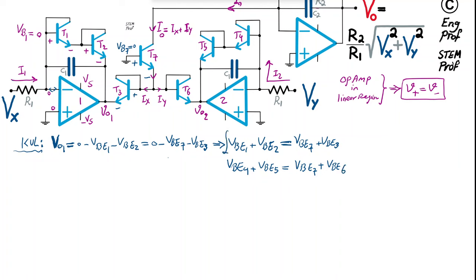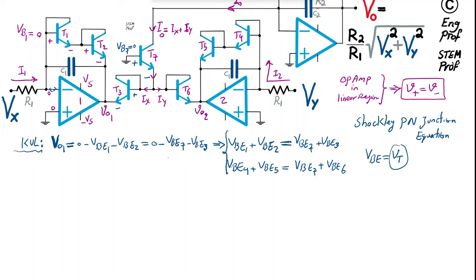We now apply the Shockley PN junction equation for the NPN BJT: VBE = VT × ln(IC / IS), where VT is the thermal voltage (approximately 25 mV at room temperature), IC is the collector current, and IS is the saturation current.